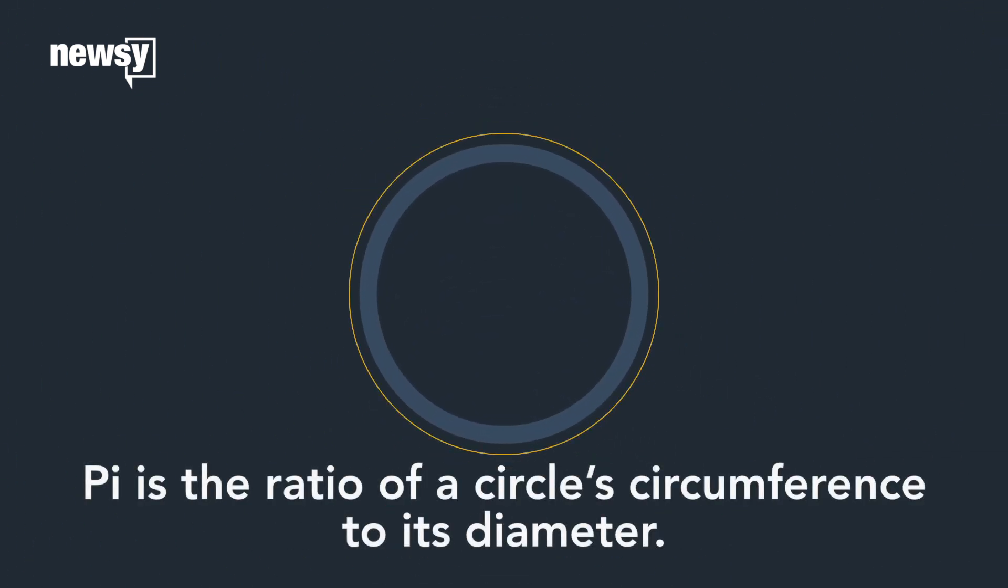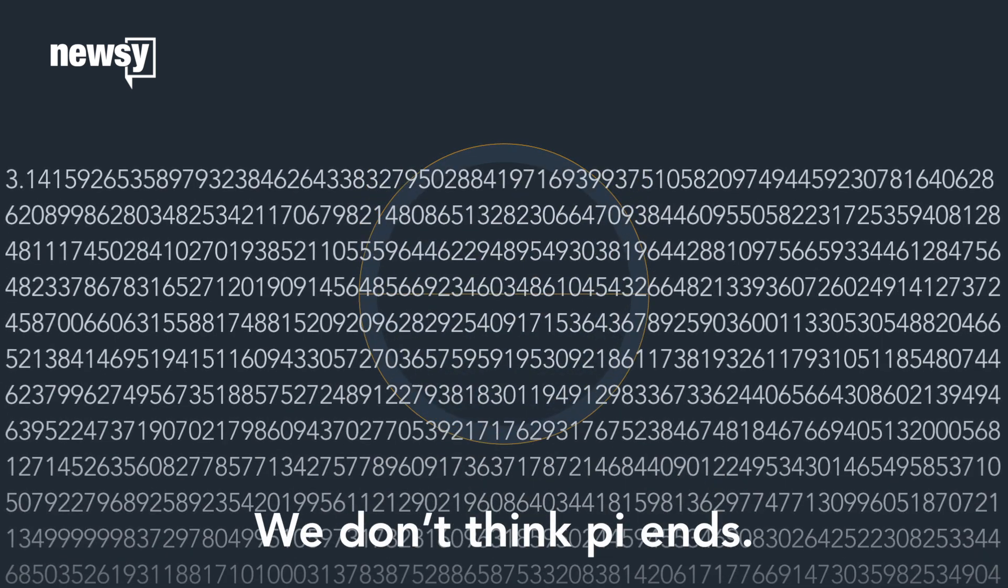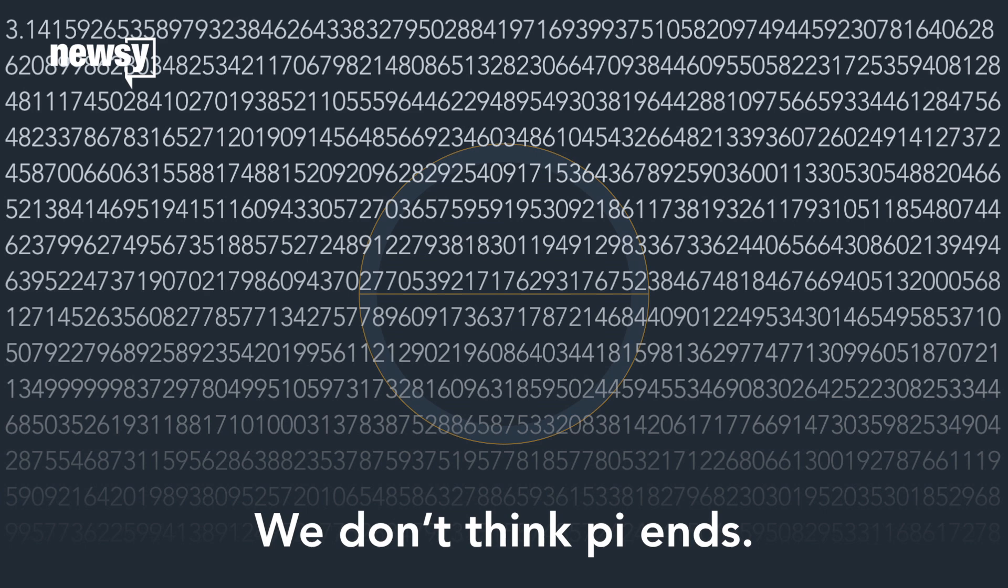Pi is the ratio of a circle's circumference to its diameter. We don't think pi ends. Instead, we just define it more and more precisely.